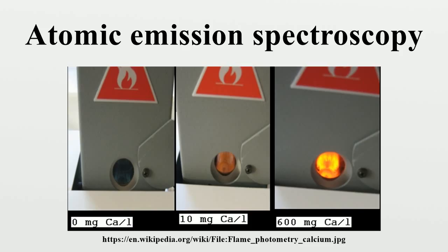Inductively coupled plasma atomic emission spectroscopy (ICP-AES) uses an inductively coupled plasma to produce excited atoms and ions that emit electromagnetic radiation at wavelengths characteristic of a particular element. Advantages of ICP-AES are excellent limit of detection and linear dynamic range, multi-element capability, low chemical interference, and a stable and reproducible signal.